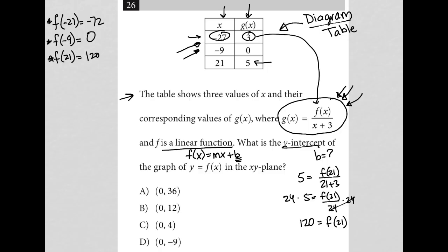How is this helpful? This is helpful because now these are also ordered pairs. This is the point negative 27 comma negative 72. This is the point negative 9 comma 0. This is the point 21 comma 120. But these points are no longer for the g(x) function. They're now for the f(x) function.